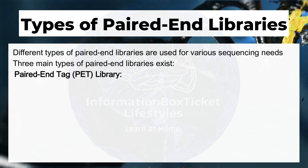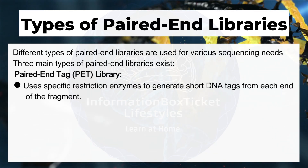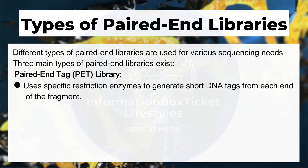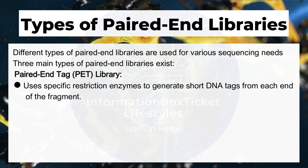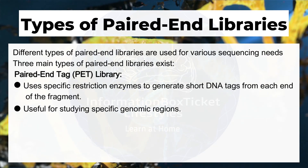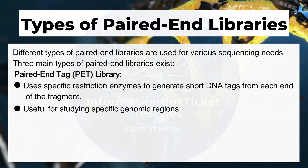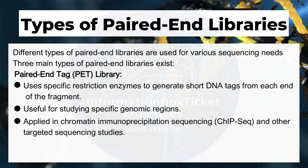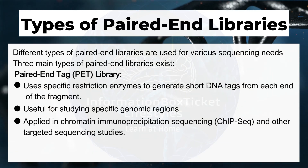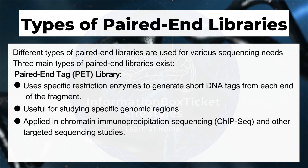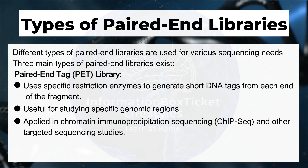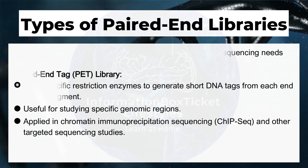The paired end tag library uses specific restriction enzymes to generate short DNA tags from each end of the fragment. It is useful for studying specific genomic regions and is applied in chromatin immunoprecipitation sequencing (ChIP-seq) and other targeted sequencing studies.